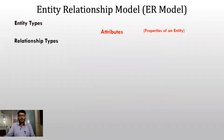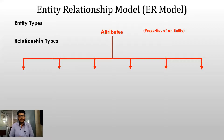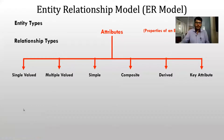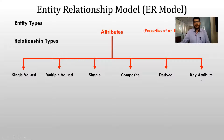Now let us understand what we mean by attributes. Attributes are nothing but properties of an entity. We have different types of attributes: single-valued versus multiple-valued attribute, simple attribute versus composite attribute, derived attribute, and key attribute.